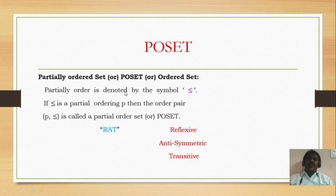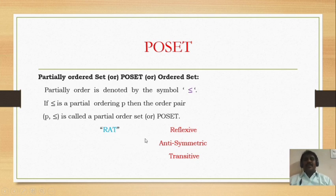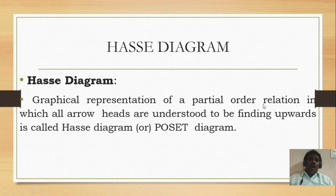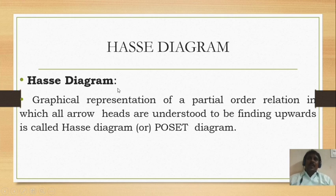Partial order is always denoted by the symbol ≤. If ≤ is a partial ordering, then the ordered pair (P, ≤) is called a partial ordered set — RAT means reflexive, anti-symmetric, and transitive. Now, Hasse diagram — this is a long answer question and it is very important and easy to draw. The Hasse diagram is the graphical representation of a partial order relation in which all arrowheads are omitted, also called a poset diagram. Rules to draw: remove reflexive property, remove transitive property, and remove the arrows.